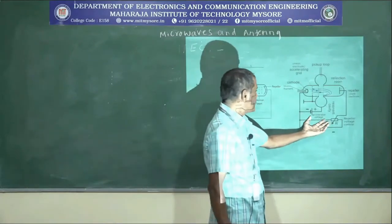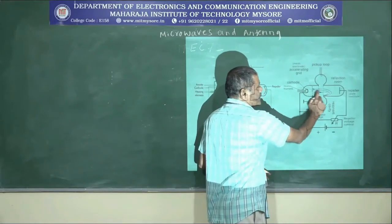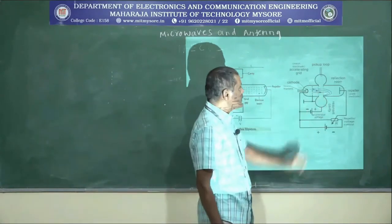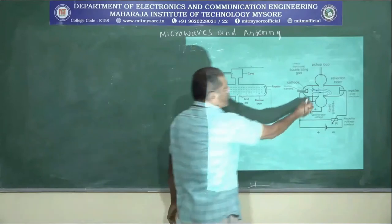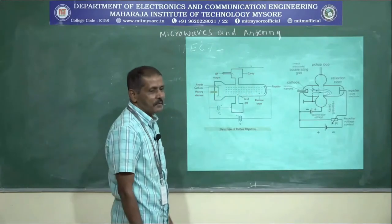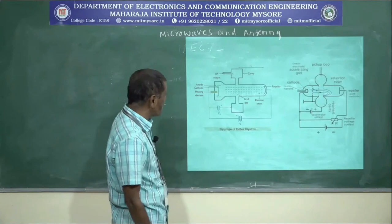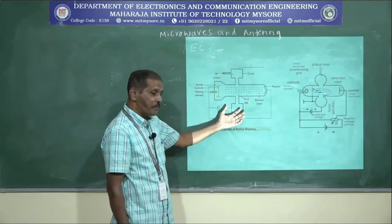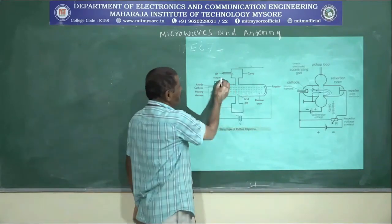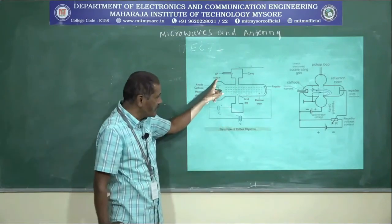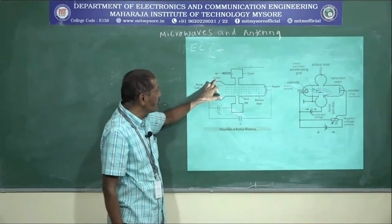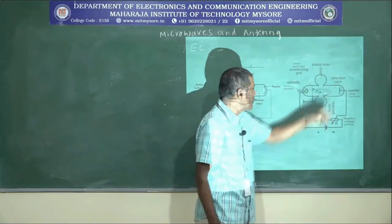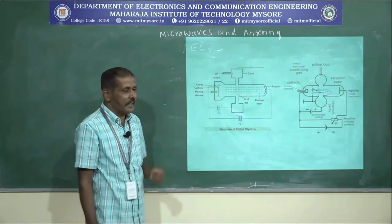The same structural organization is shown in both diagrams. The blue lines with arrow marks represent the electron movement paths. The oscillations produced inside this device are taken as RF output — that is, radio frequency signals generated inside the tube are collected from the pickup loop as the RF output.